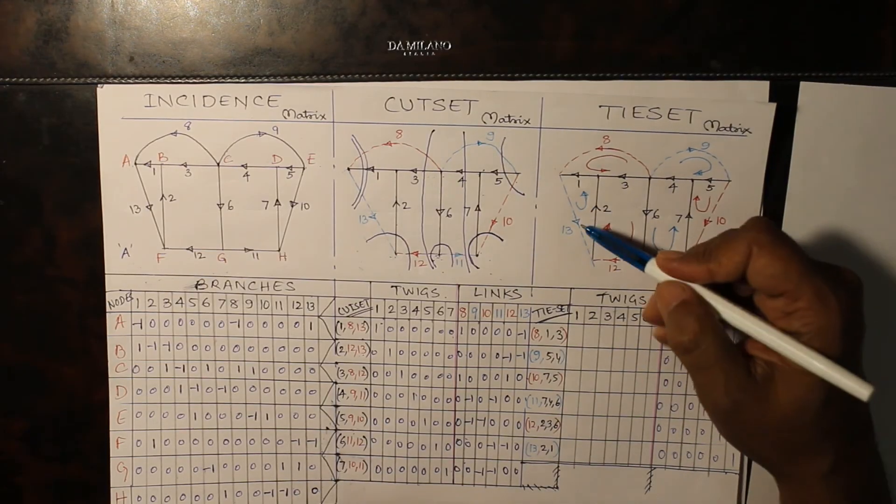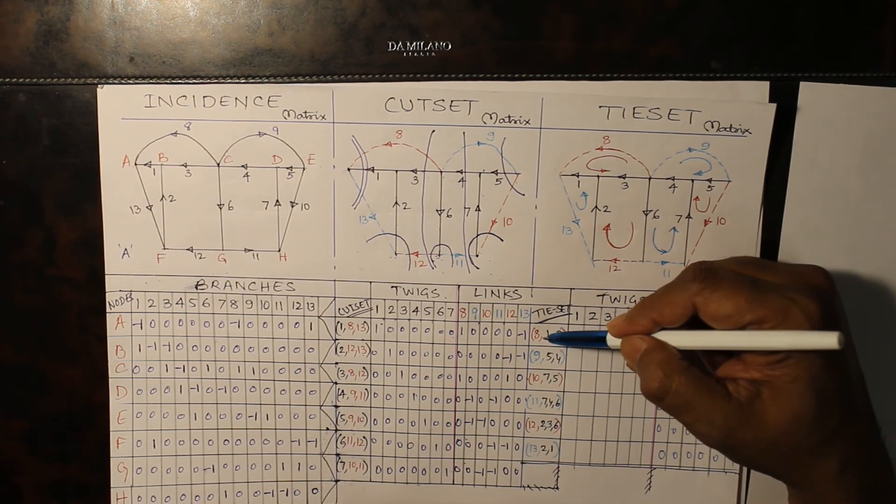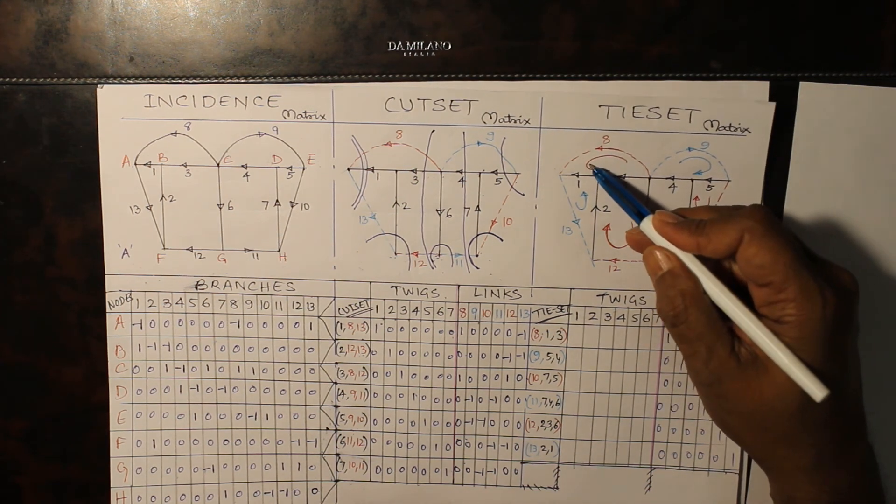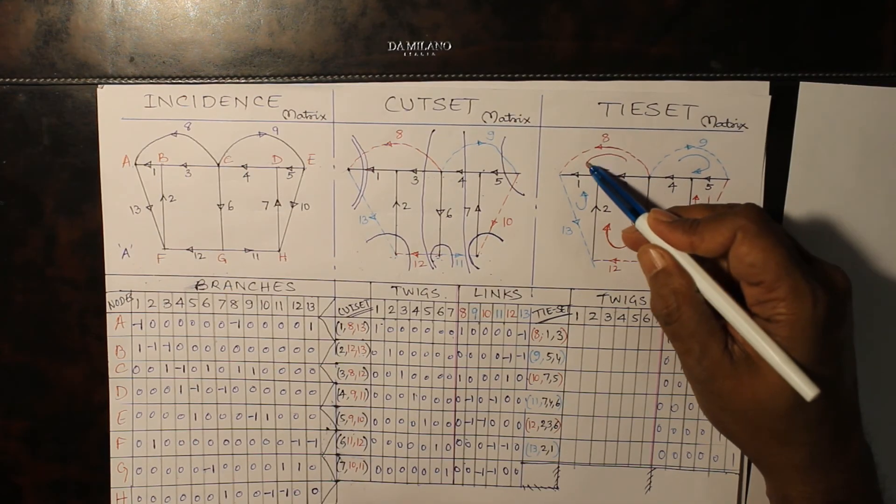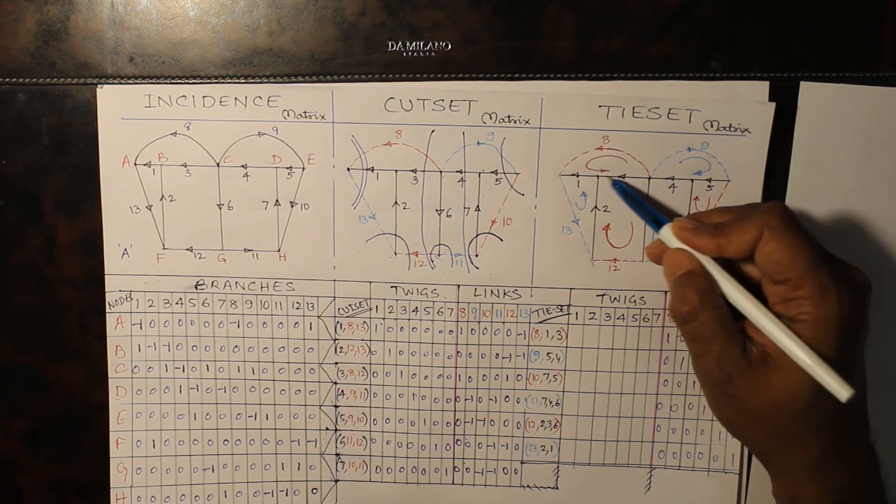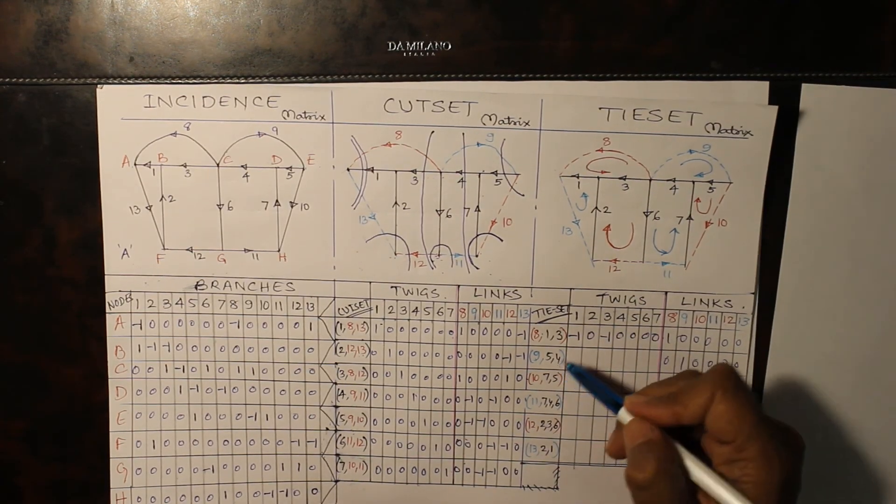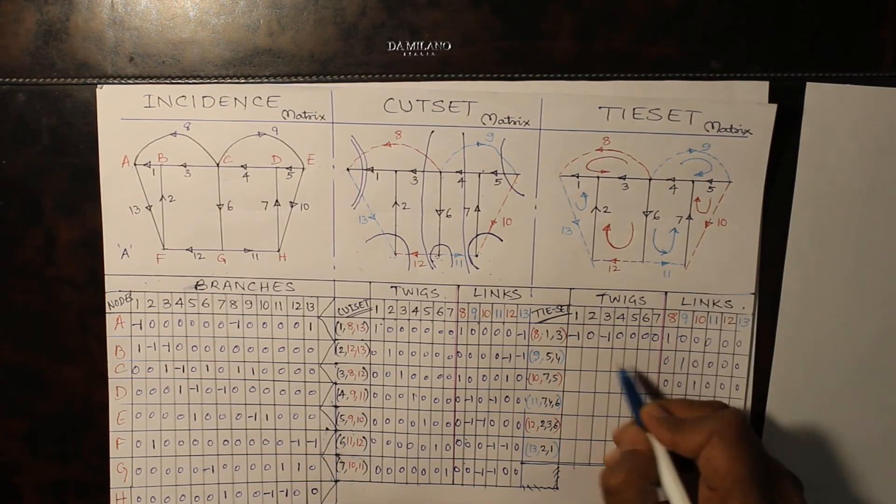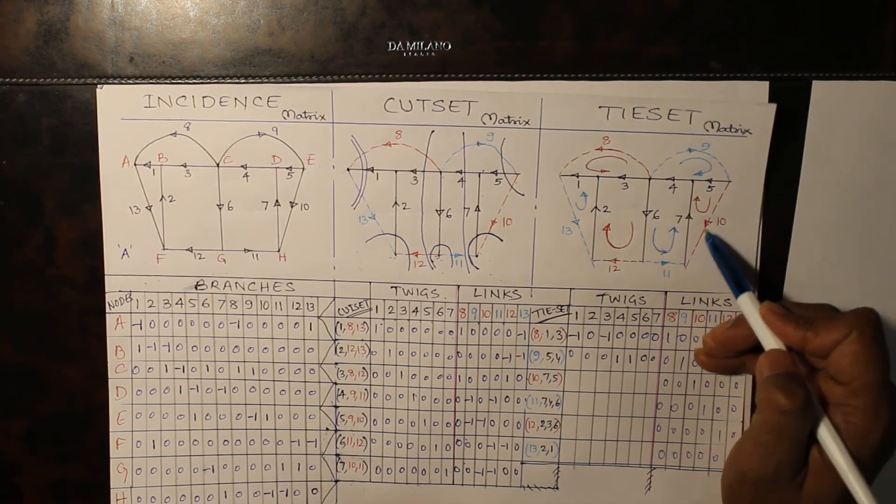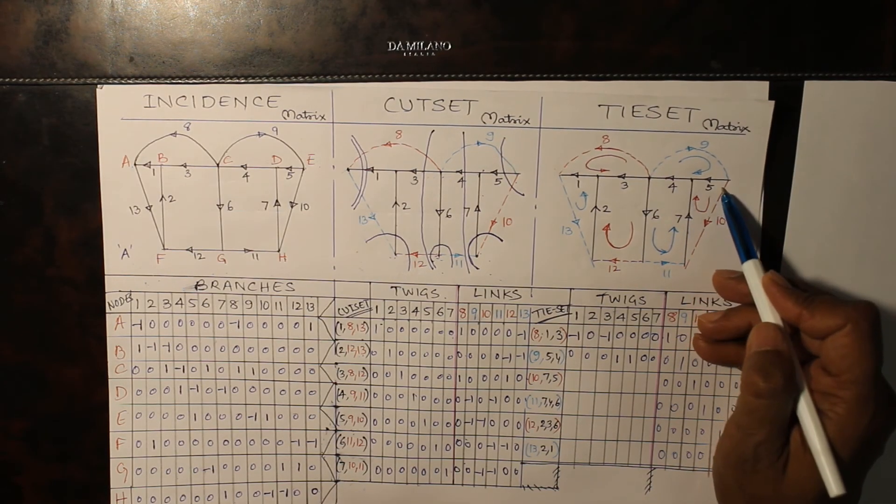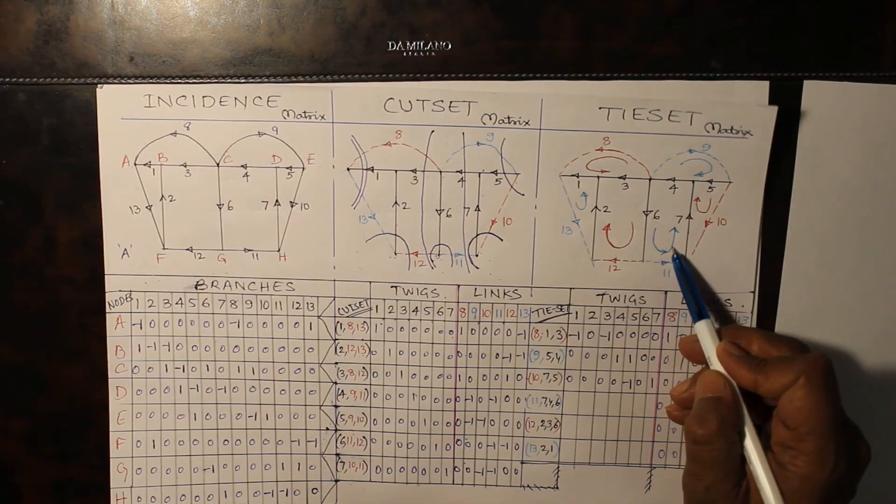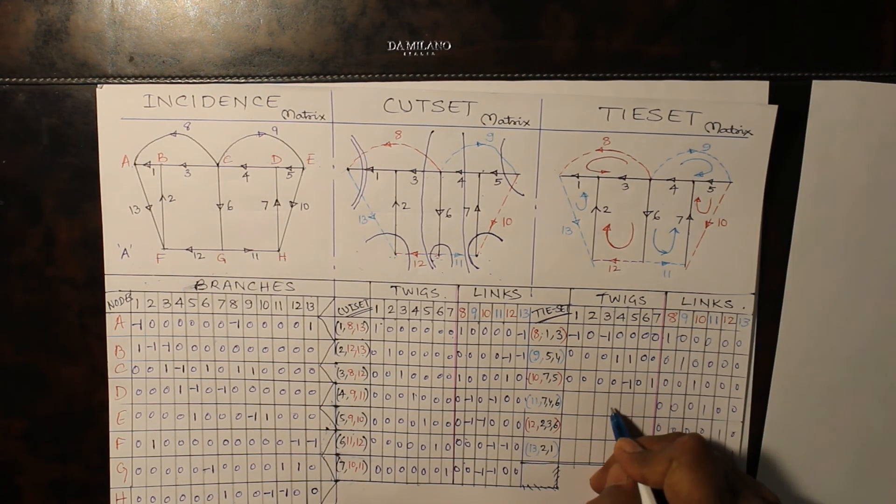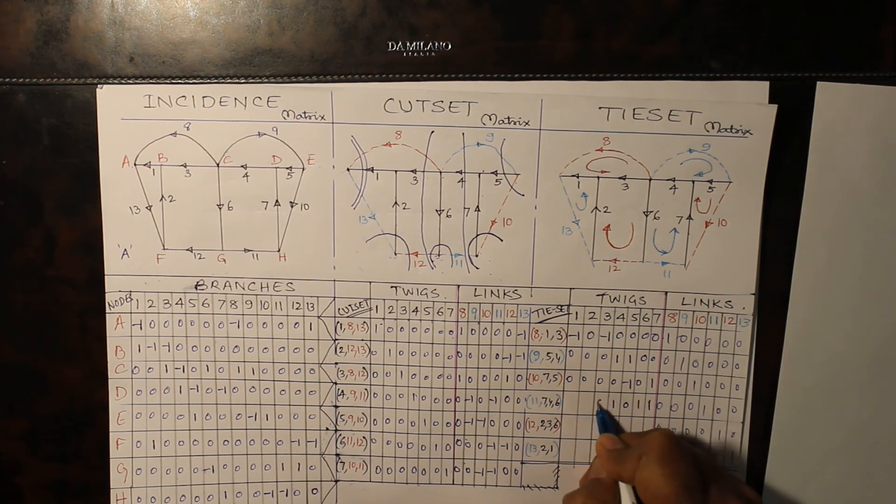Now, for twigs. One by one, in the same sequence. 8. 8 is having opposite direction. The direction of 8 is in opposite direction to that of 1 and that of 3 also. 9, 5, 4. Where is 9? 9, 5 and 4. Same direction. 10. 7, same direction. 5, opposite direction. 11. 7, same direction. 4, same direction. 6, same direction. So, 4, 6 and 7 plus 1. It is zeros.